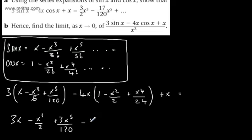Then we're going to have minus 4x. Then we're going to have plus 4x cubed over 2, which gives me plus 2x cubed. And then we're going to have minus 4x to the 5th over 24, and then our little x at the end.